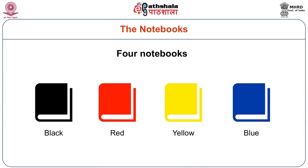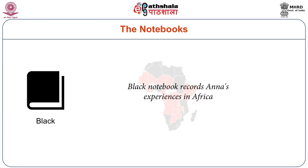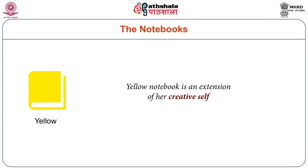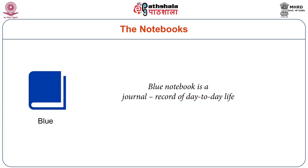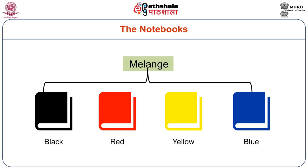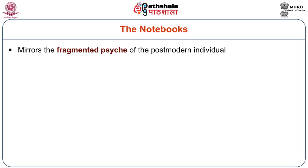The four notebooks each talk about different things. The black notebook records Anna's experiences in Africa. The red notebook represents Anna's political consciousness. The yellow notebook is an extension of her creative self, and the blue notebook is a journal — a record of day-to-day life. Beyond these four, there is the golden notebook itself. These four notebooks become a composite, a kind of melange, mirroring the fragmented psyche of the contemporary or postmodern individual.